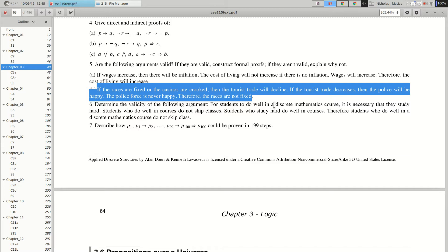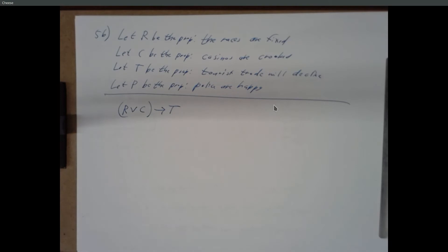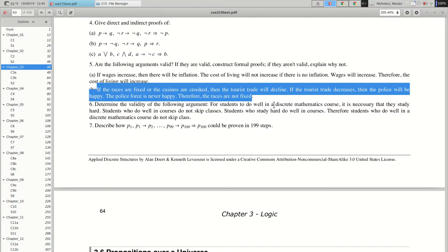If tourist trade declines, then the police will be happy, so let P be the proposition that police are happy. The police are never happy, therefore the races are not fixed. I think we've got four propositions, and I think those are sufficient to state all of these things.